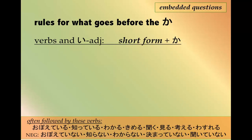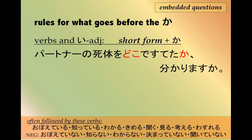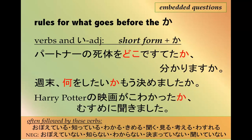For verbs, adjectives, or anything in the negative, you can just add か to the short form. For example: パートナーの死体をどこで捨てたかわかりますか — 'Do you know where you dumped the body of your partner?' And: 週末、何をしたいかもう決めましたか — 'Have you already decided what you want to do on the weekend?' Also: ハリーポッターの映画が怖かったか娘に聞きました — 'I asked my daughter whether the Harry Potter movie was scary.'